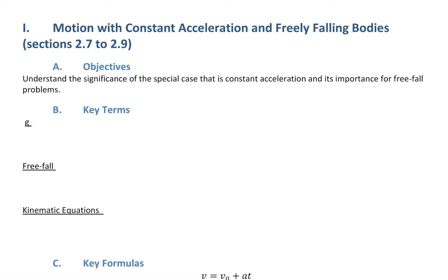Hello, and welcome to lecture four. In this fourth lecture of the semester, and the third lecture of chapter two — also the last lecture of chapter two — we're going to talk about the topic of motion with constant acceleration, which also applies to freely falling bodies, because a freely falling body is a constant acceleration problem. These are sections 2.7 to 2.9. Our goal here is to understand the significance of the special case that is constant acceleration, and its importance for free fall problems.